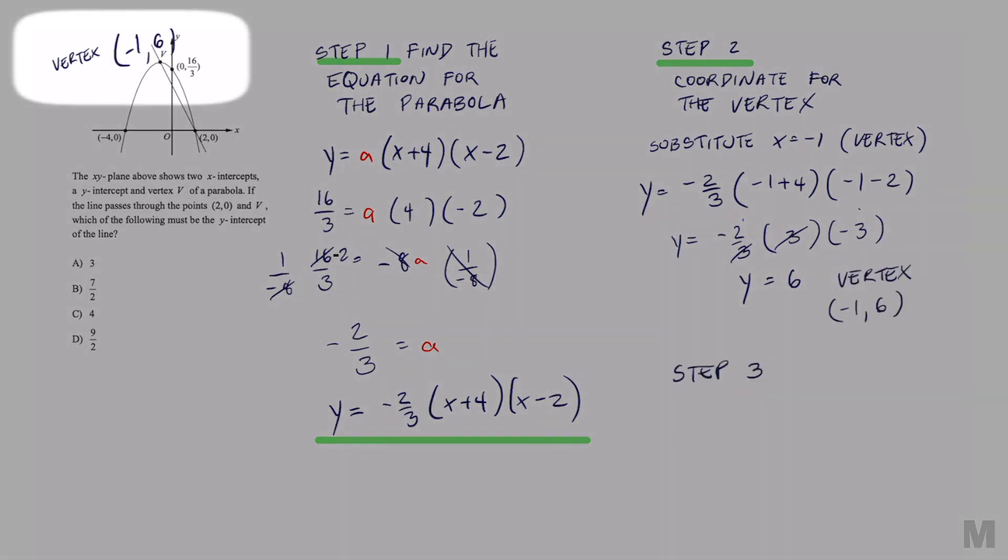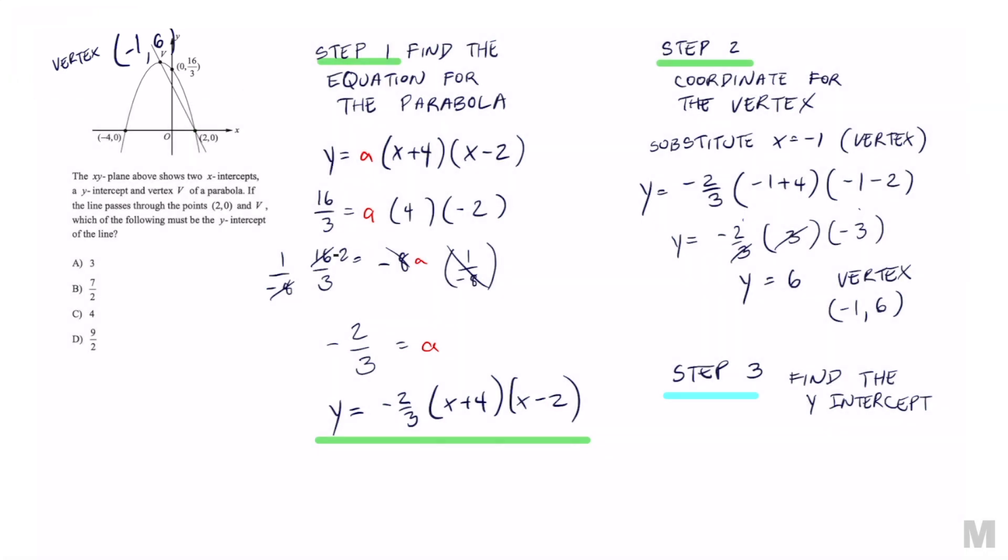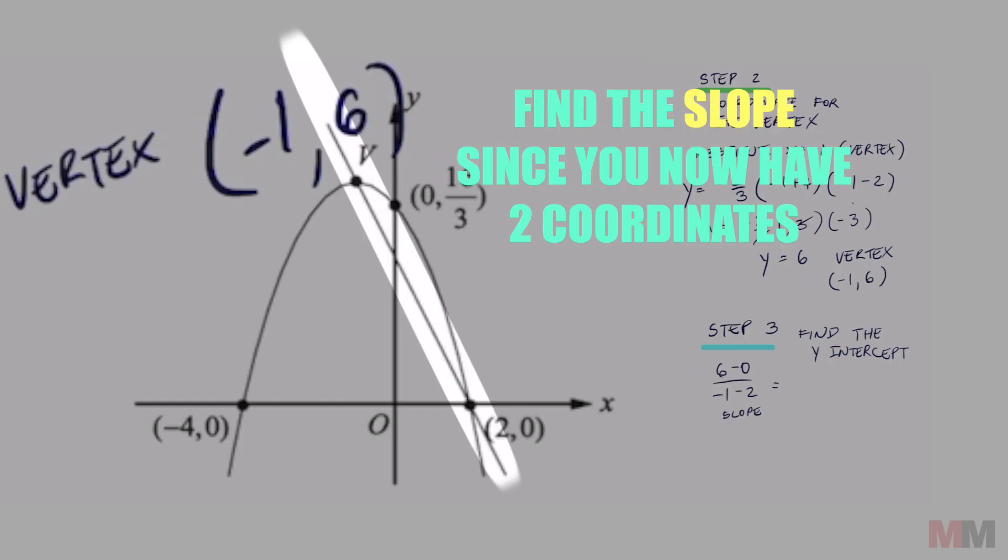Now we can move on to finding the y-intercept, step 3. First we're going to have to find the slope of that line. Just use the slope formula, and that's going to simplify to 6 over negative 3, which equals negative 2.